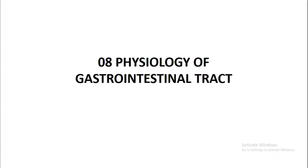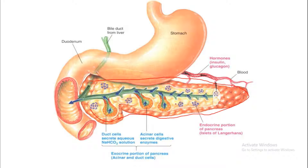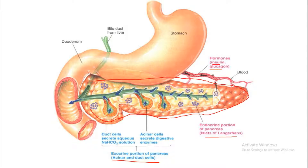We are continuing our physiology of the gastrointestinal tract, and in this video we are going to cover the pancreas. We will go through the physiological aspects of the pancreas. There are two physiological parts: the endocrinal part and the exocrinal part. The endocrinal part includes the islets of Langerhans, which releases hormones such as insulin and glucagon directly into the blood vessels.